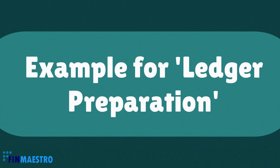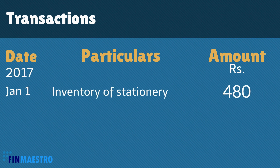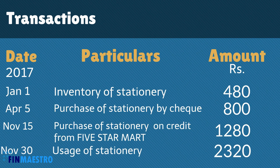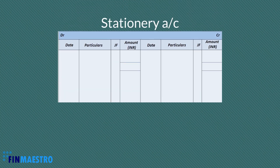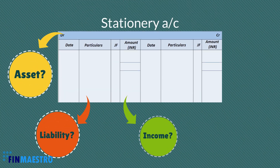Now we'll help you understand the preparation of a ledger by posting the following transactions. Below is the list of activities that happened in the stationery account of a firm. From the first item we can understand that this is an inventory account for stationery items. So what kind of an account is this — asset, liability, income, or expenses?